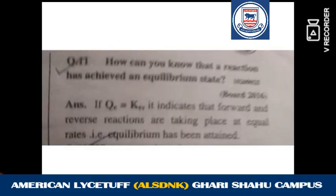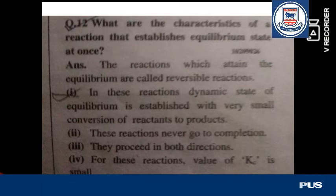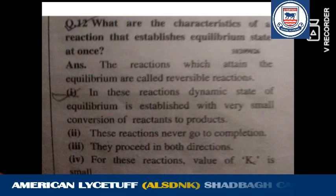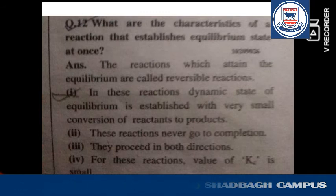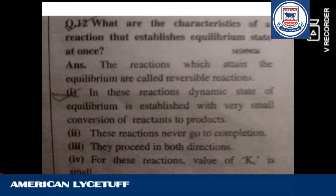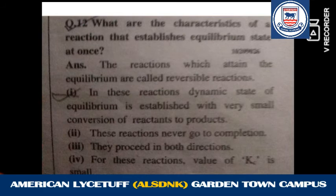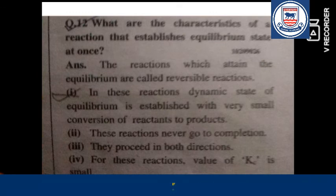Question number 11: how can you know that a reaction has achieved equilibrium state? What are the characteristics of a reaction that establishes equilibrium? You only need to give two characteristics for a two-mark short question. Reactions that attain equilibrium are reversible; dynamic equilibrium is established with very small conversion of reactants to products; these reactions never go to completion and proceed in both directions; and the value of KC is small.